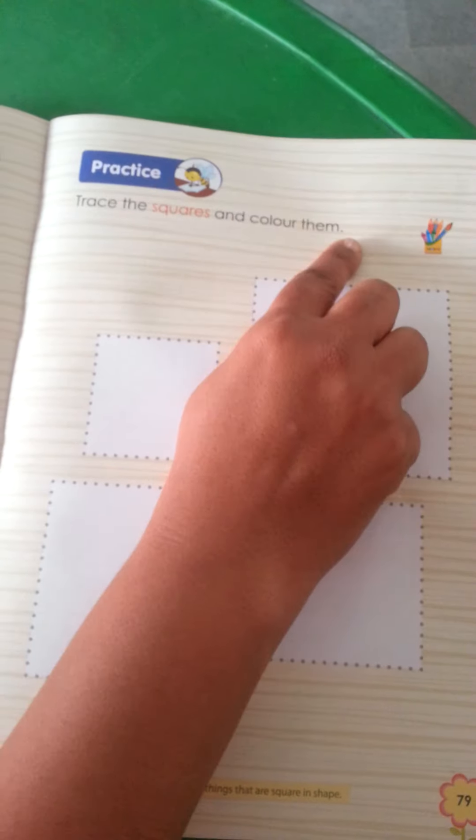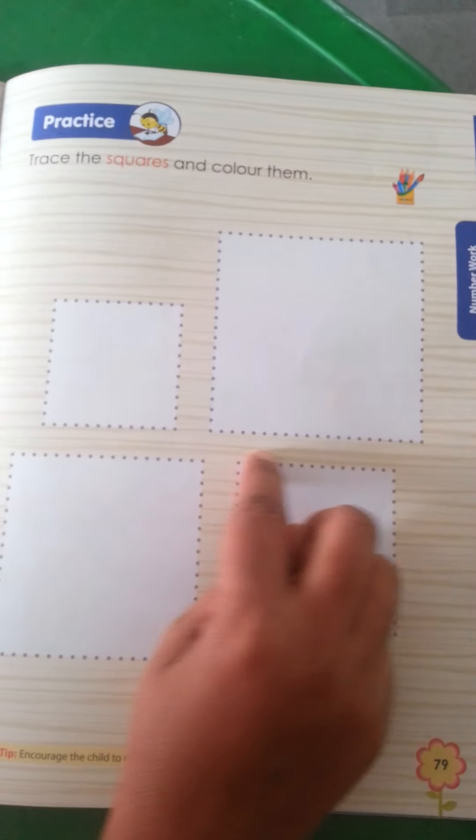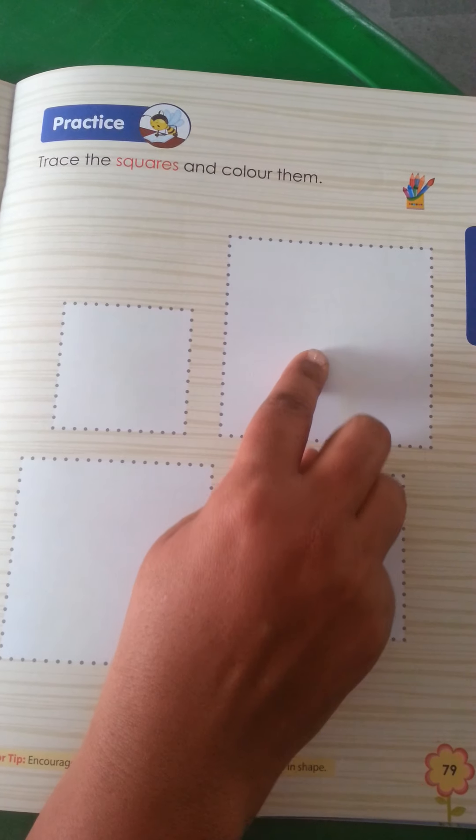Now, come to the page number 79. Trace the square and color them. This is what we need to do. Square is my name. This dotted line, we need to trace per line. And come to the page number one.